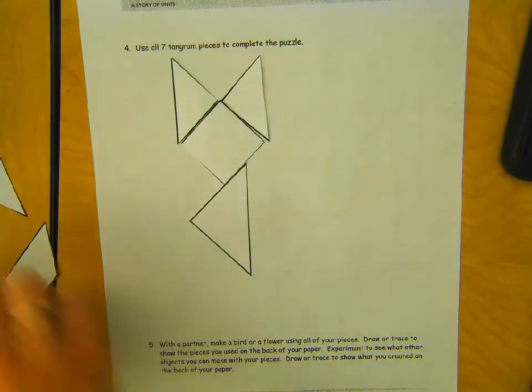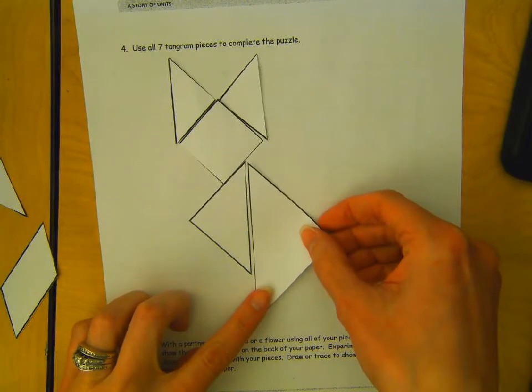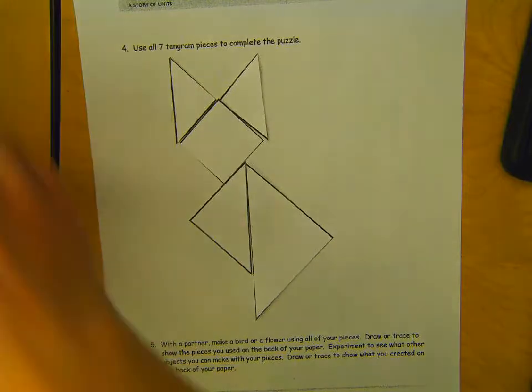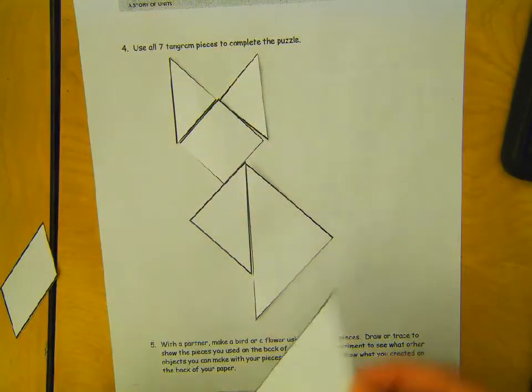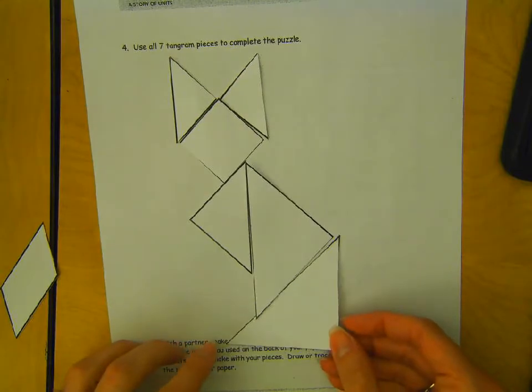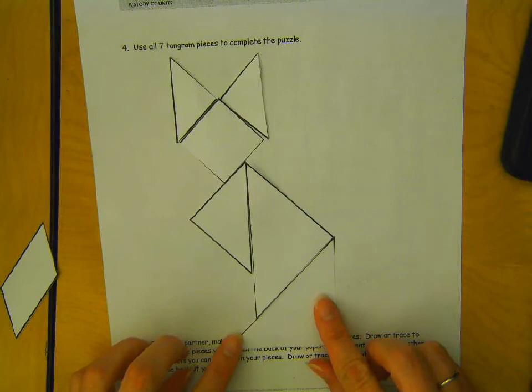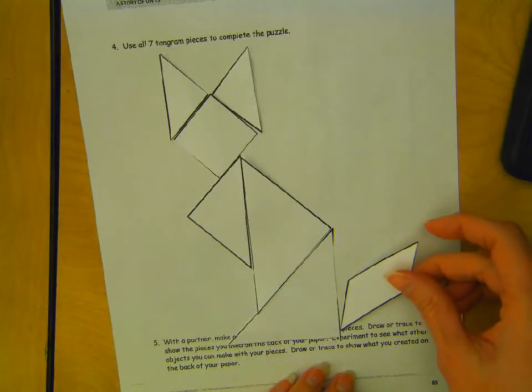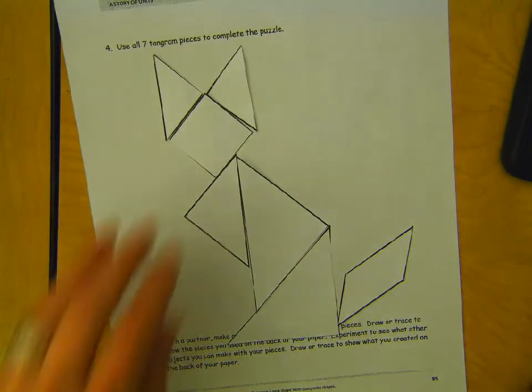And then, I'm going to use a big triangle to go right along next to it. And then, it looks like it's sitting down. So, I'm going to use this other one, like this, coming down along there. And then, the parallelogram becomes its tail.